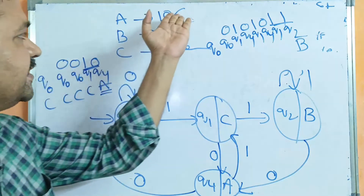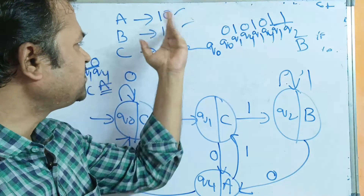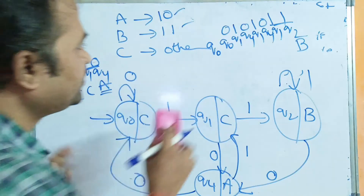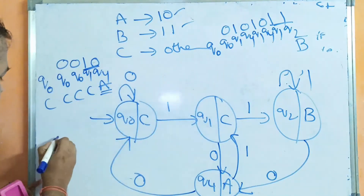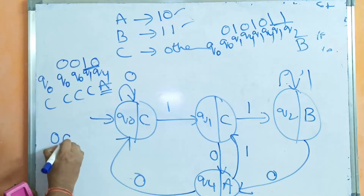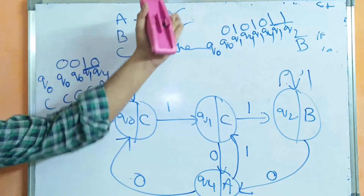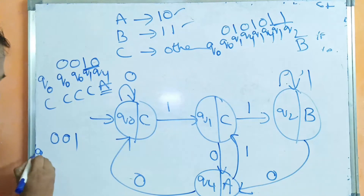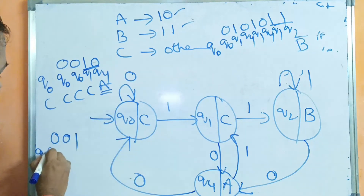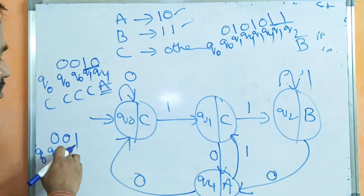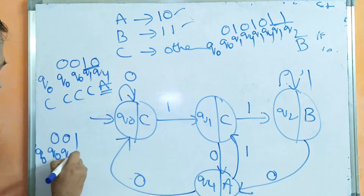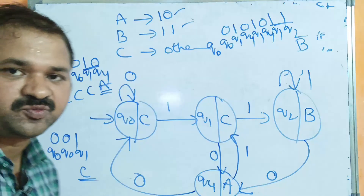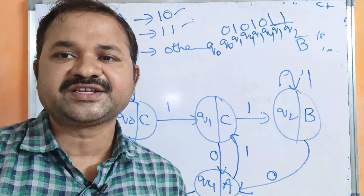The third scenario is if the string doesn't end with 1,0 or 1,1 — it has to produce C as the output. Take the string 0,0,1. It is not ending with 1,0 or 1,1, so we have to produce C. Q0 on 0 → Q0, Q0 on 0 → Q0, Q0 on 1 → Q1. We end at Q1 which has output C. So we are getting C as the output. In this way, we can solve this problem.